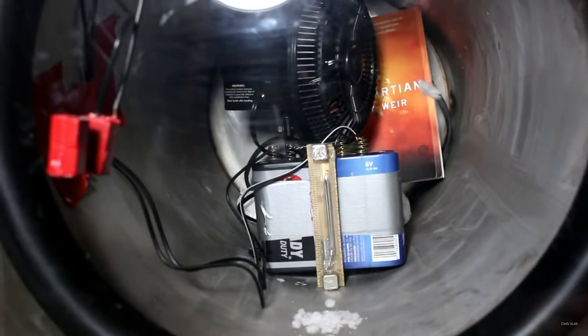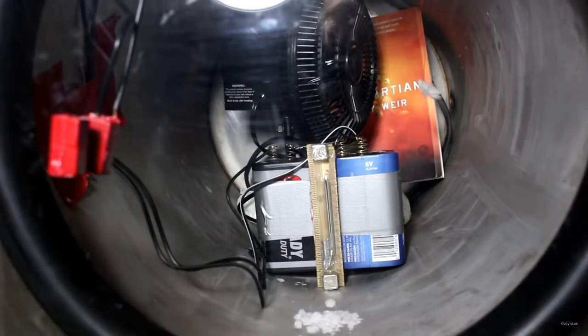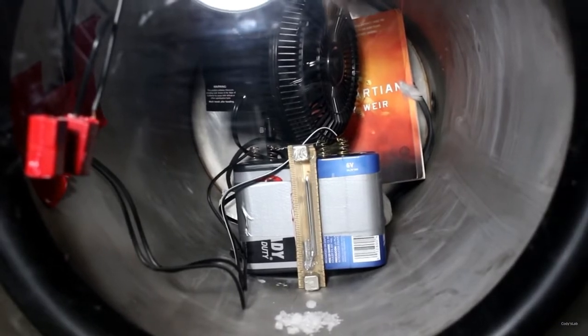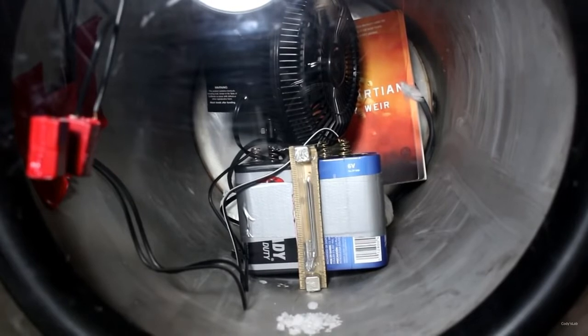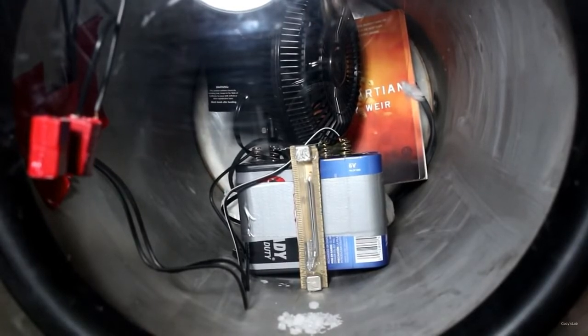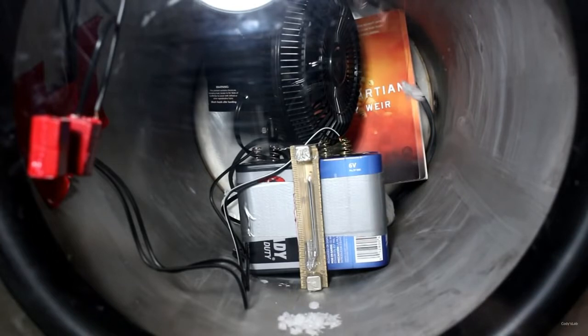And now we're going to suck out all of the air, or at least most of it, down to about four to six millimeters of mercury, which is of course the pressure on the surface of Mars. So let's plug in the vacuum pump.